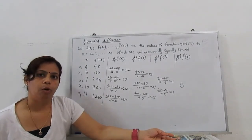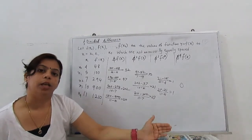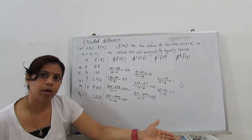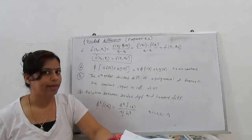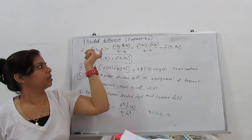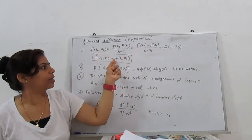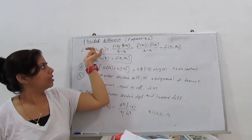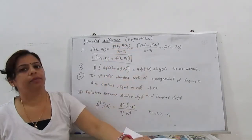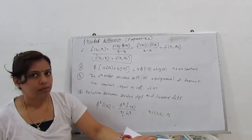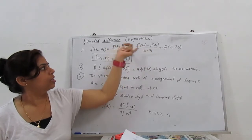Next I will move on to the properties of divided difference. The first property is the commutative property: f[x0, x1] = f[x1, x0]. Let's verify: f[x0, x1] = (f(x1)-f(x0))/(x1-x0). If we reverse it, f[x1, x0] = (f(x0)-f(x1))/(x0-x1). The negatives cancel, so f[x1, x0] = f[x0, x1]. Similarly f[x1, x2] = f[x2, x1].